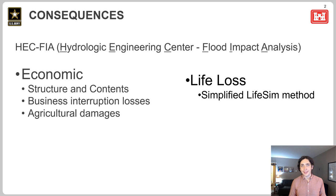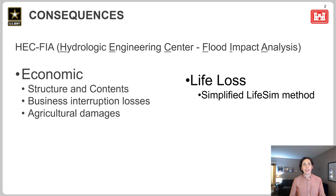FIA is a consequence model. It takes hydraulic information about a flood from, say, HEC-RAS, and combines it with information about what is in the floodplain — structures, people, crops — to calculate damages.